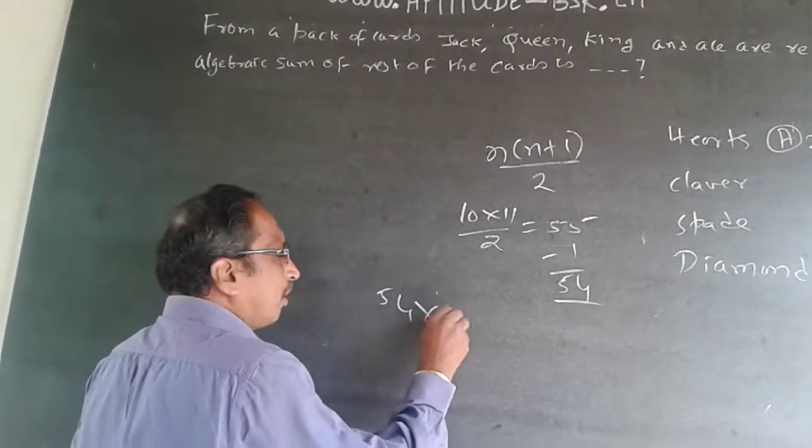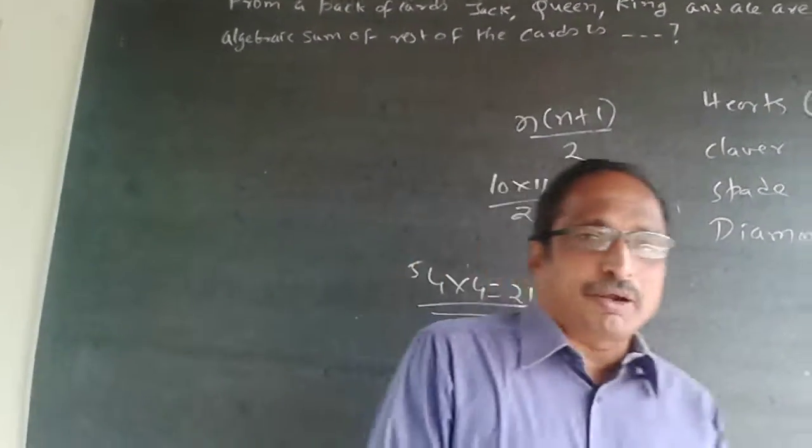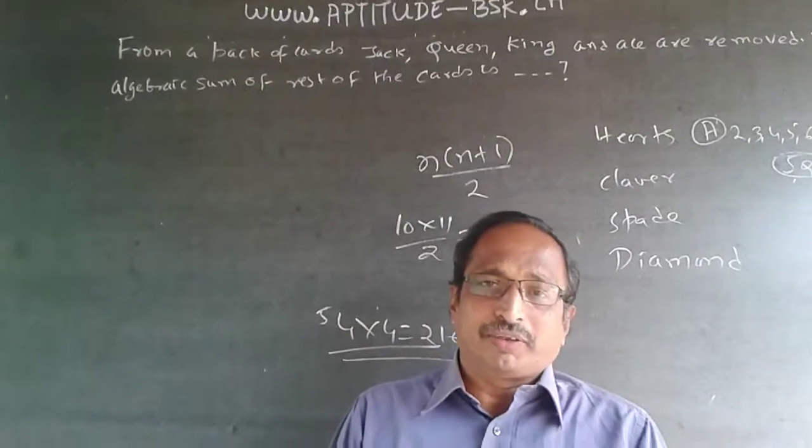54 into 4 will be 216. The answer is 216. Subscribe to my channel, I will be adding questions every now and then.